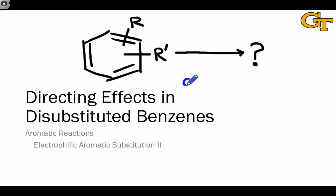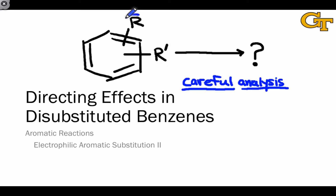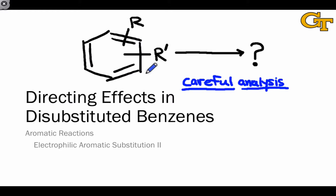This is one case where it generally will benefit you to do careful analysis rather than relying on intuition or intuitive rules. By carefully analyzing the influence of one R group and where it's directing, and then looking at the influence of the other R group and where it's directing and comparing the two, you'll be able to identify positions that are directed to by both R groups, which are likely to react, and more carefully judge the relative likelihood of positions directed to by one or the other of the substituents.